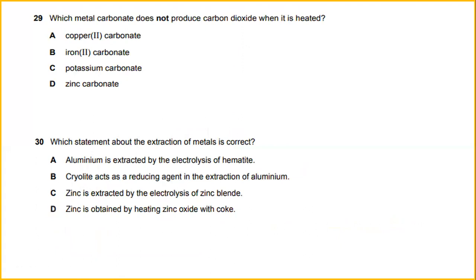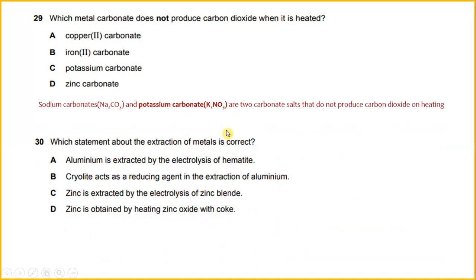Which metal carbonate does not produce carbon dioxide when it is heated? Sodium carbonate and potassium carbonate are two carbonate salts that do not produce carbon dioxide on heating. The answer will be C.